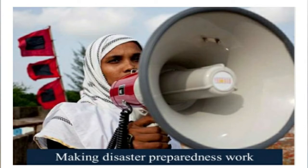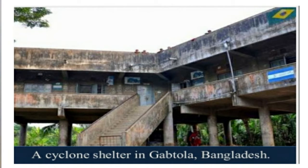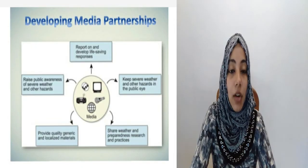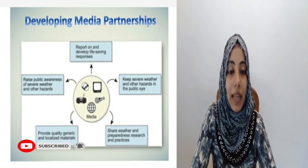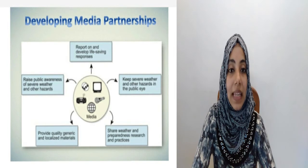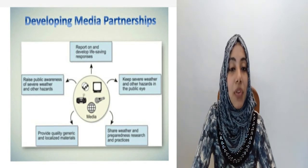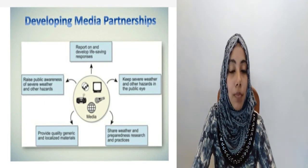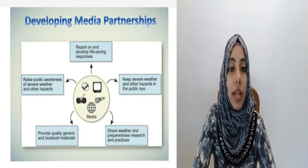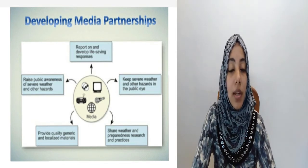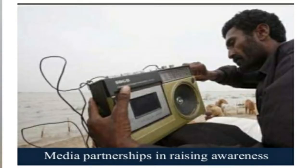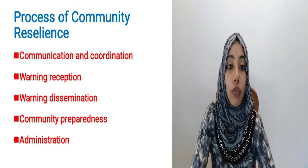Preparedness for our risk and disaster — this is an image on cyclone Bangladesh. Bangladesh cyclone partnership: provide information and ensure the supply of quality general and localized media. Severe weather changes information — provide quality materials and supply, ensuring food and community partnership. It is an image of media partnership in raising awareness.